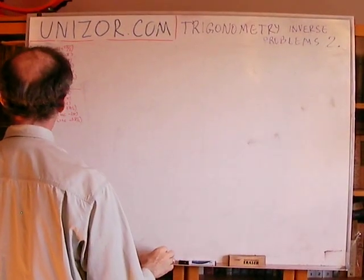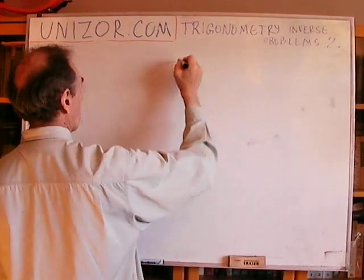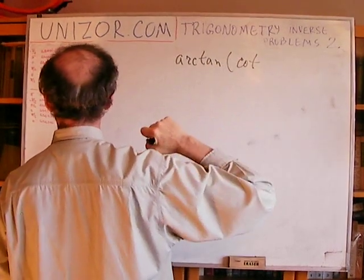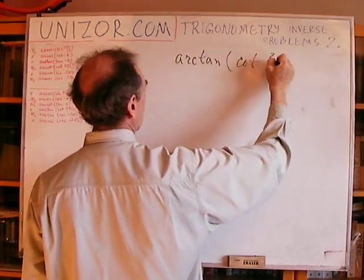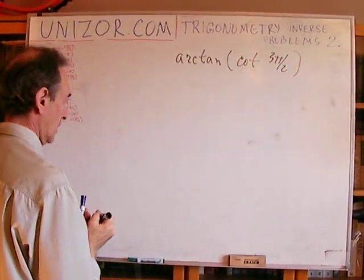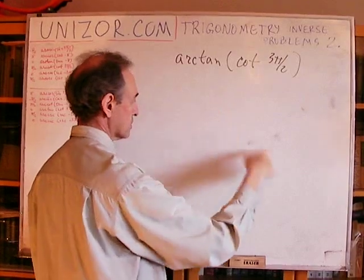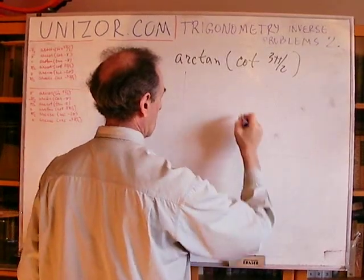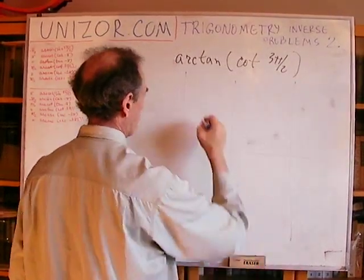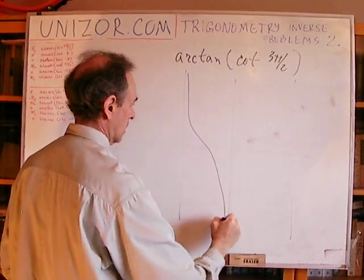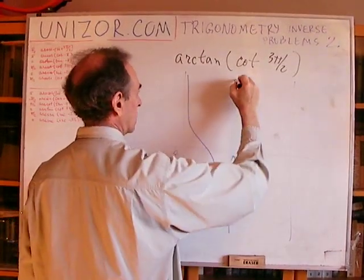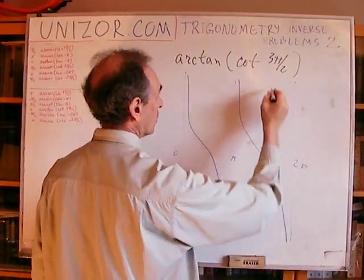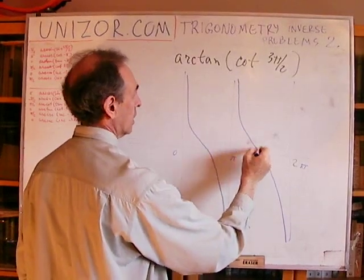Next: arc tangent of cotangent of 3π/2. Let me draw the cotangent — from 0 to π is one branch. But now we need another branch of the cotangent, because we are looking for 3π/2, which lies on the next branch. The cotangent of 3π/2 is equal to 0.